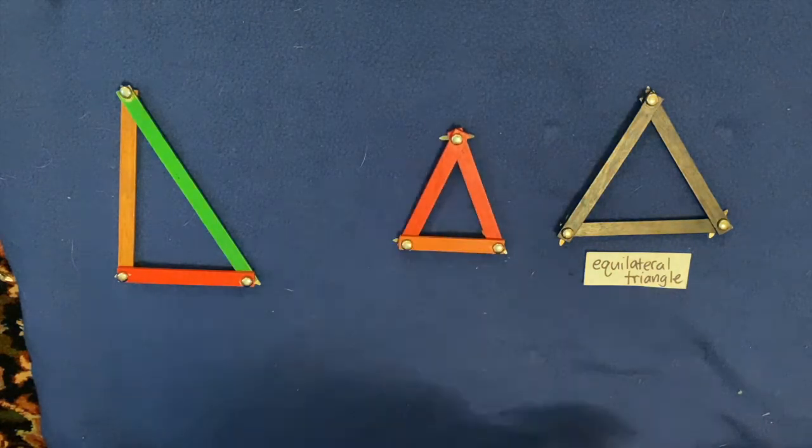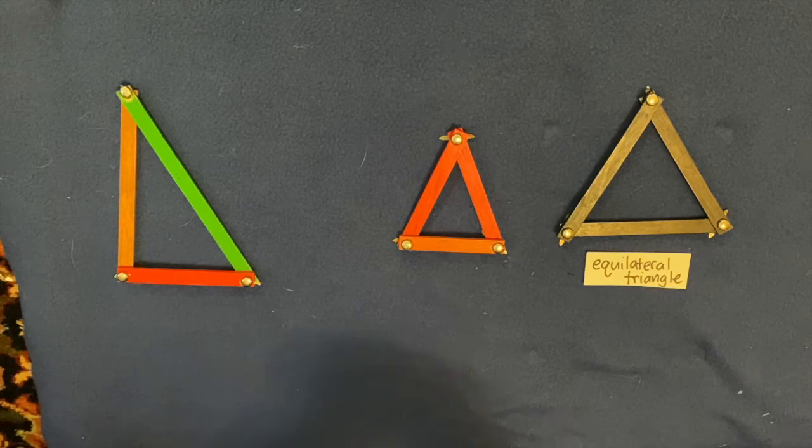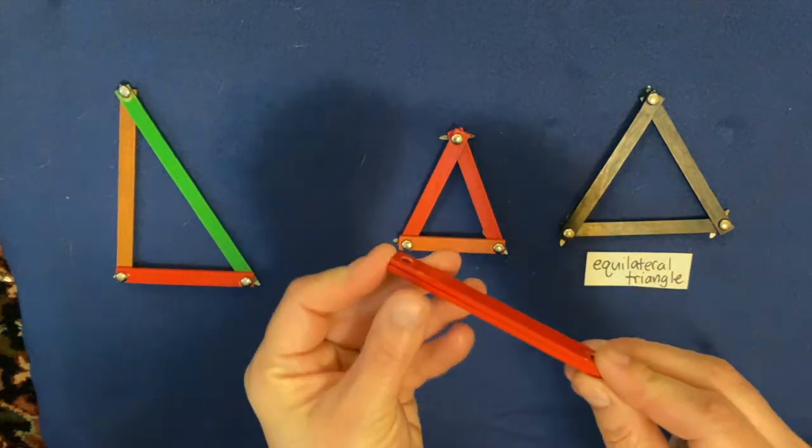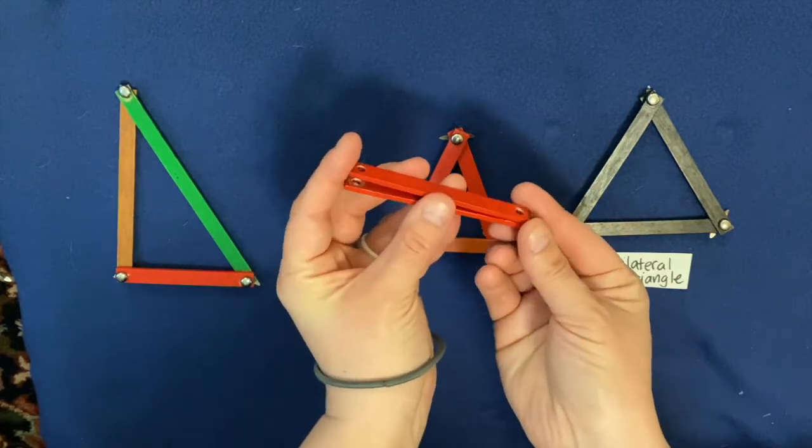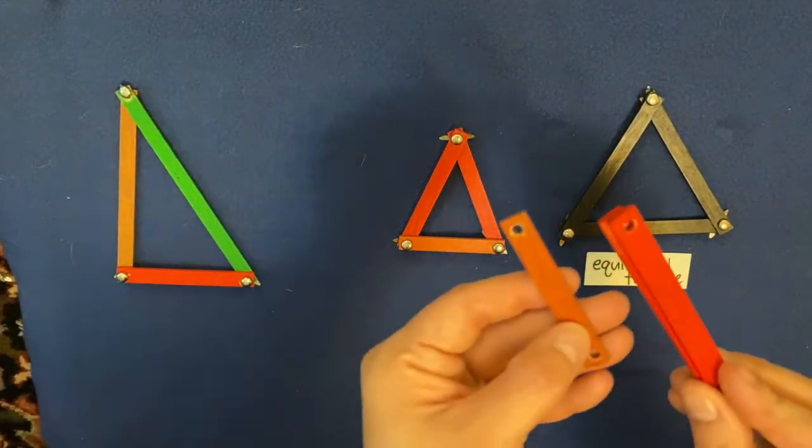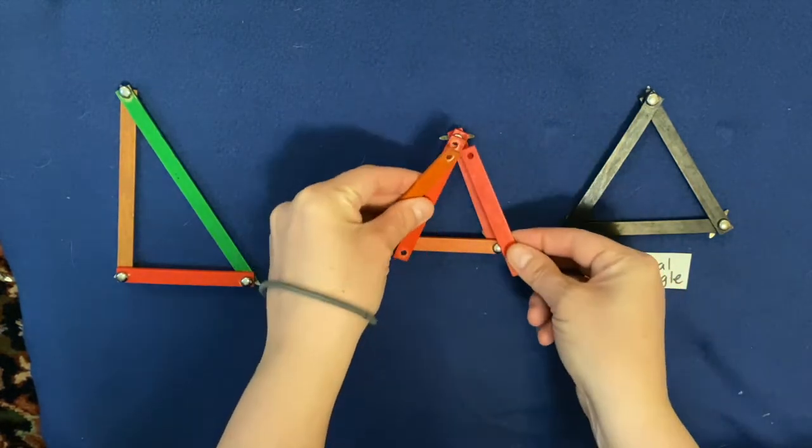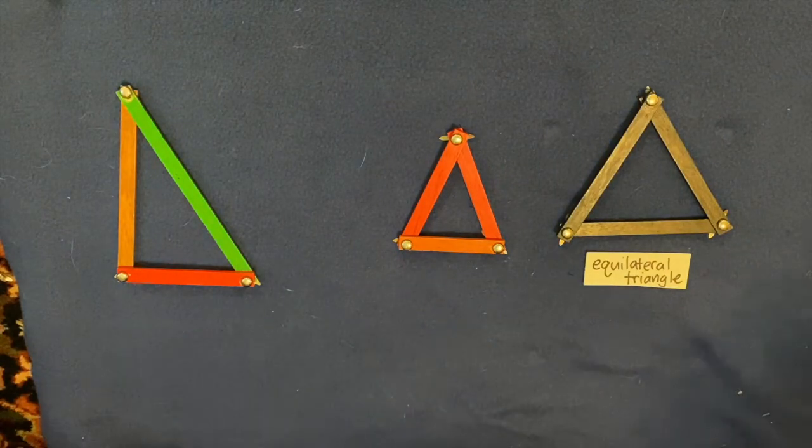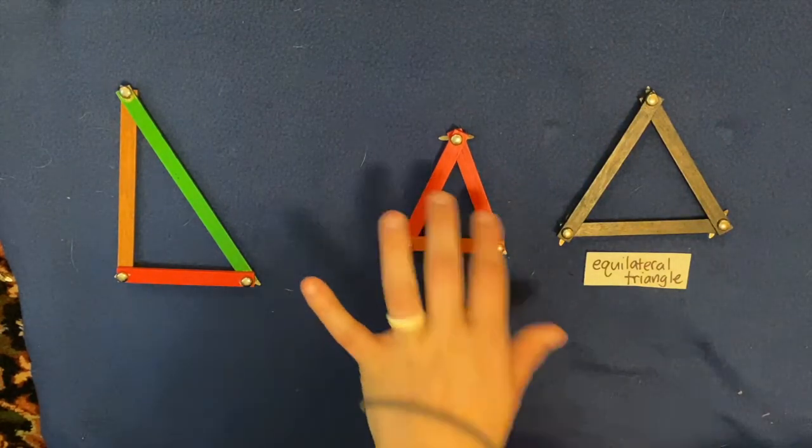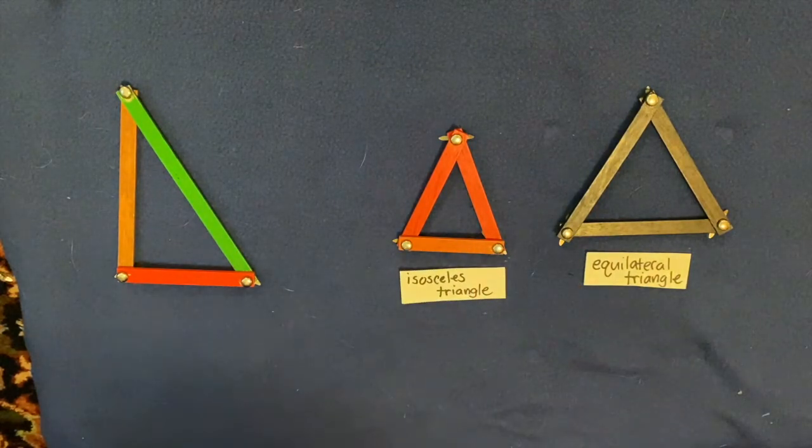Now this one here is made up of two red geometry sticks on the sides here and these are exactly the same length. And then it's made of one orange stick which is shorter than the red. So it has two sides that are the same and one side that's different. A triangle that has two sides that are the same length and one different is called an isosceles triangle.